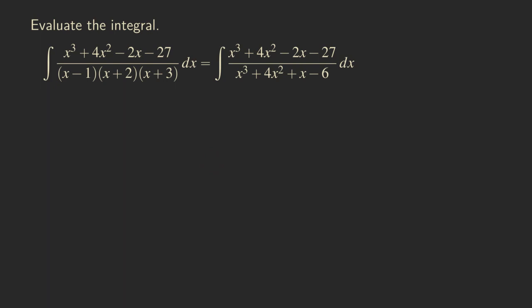But at the beginning, what we need to do here is to check whether that's a proper fraction. As you can see, this is not really a proper fraction because the degree in the numerator is the same as the degree in the denominator. So what we need to do first is to do a long division so that we can rewrite this function into a different-looking form, and then we can do the partial fraction decomposition.